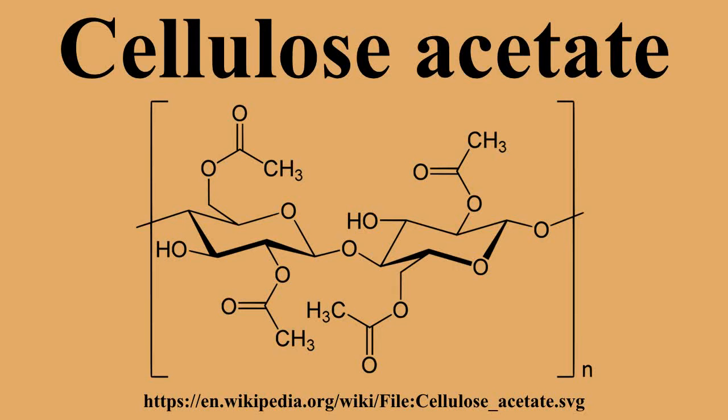Unfortunately, the outbreak of World War I postponed commercial development of this process. In November 1914, the British government invited Dreyfus to come to England to manufacture acetate dope, and the British Cellulose and Chemical Manufacturing Co. was set up. In 1917, after the United States had entered the war, the U.S. War Department invited Dr. Dreyfus to establish a similar factory in the U.S.